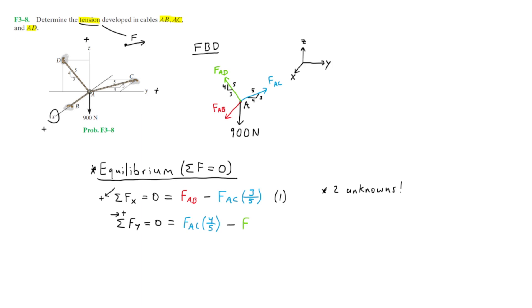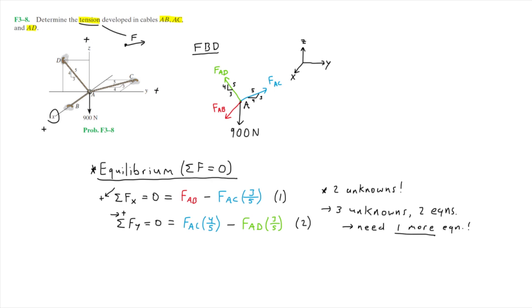Force AD points in the negative y direction on the free body diagram, so this will be minus the y component of FAD, which is FAD times three over five. This sums up all forces along the y direction, giving us our second equation. We now have three unknowns and only two equations, so we must find our third equation from the summation of forces along the z direction, where up is positive.